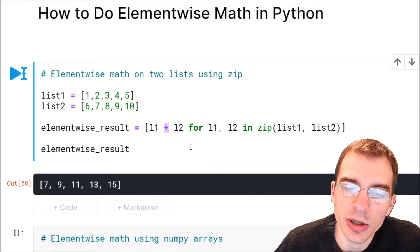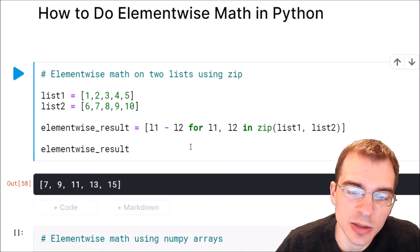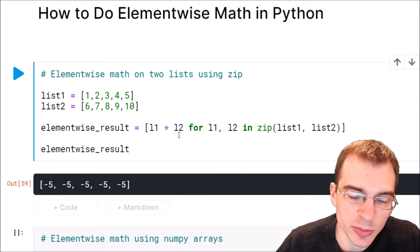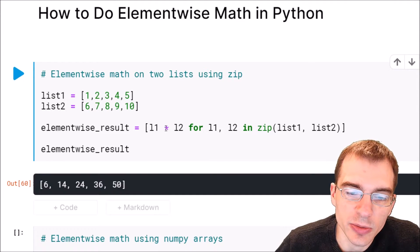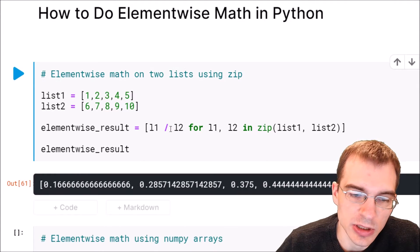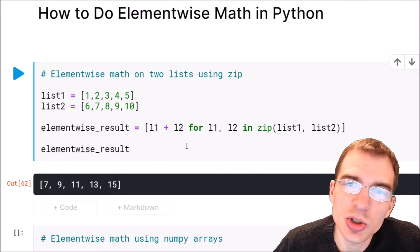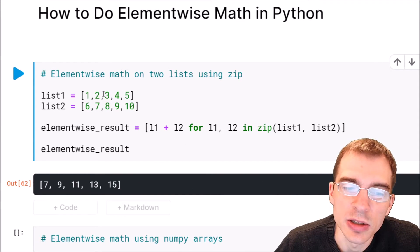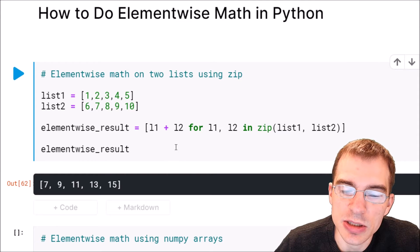Now we could put any other math operator here. If we wanted to subtract them, we could just put a minus there. If we wanted to multiply them, we could put a multiplication symbol there—we could do anything. We could do division, we could do exponentiation. You can use this same construction and put in whatever math operator you want there to do element-wise operations on two lists.